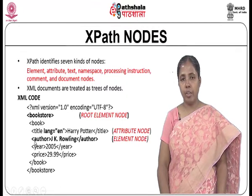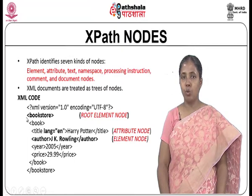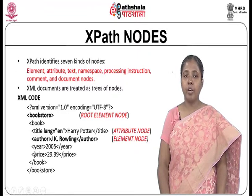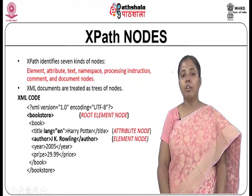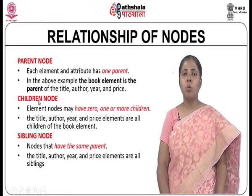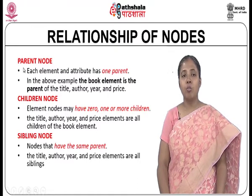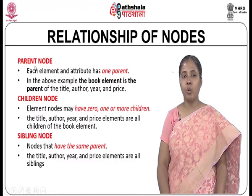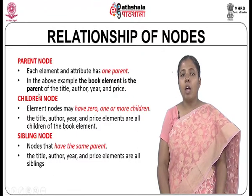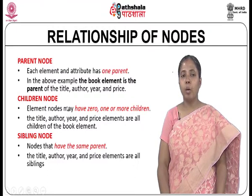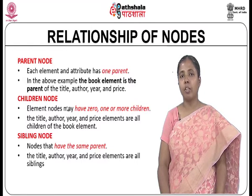When you want to navigate this XML document, we start from the root node bookstore. Under bookstore we have a book element, and under this book element we have four other elements: title, author, year, and price. Now, how is the structural relationship maintained between the nodes? We say that any node has a parent node, and each element and attribute has only one direct parent. In the above example, the book element is the parent of title, author, year, and price.